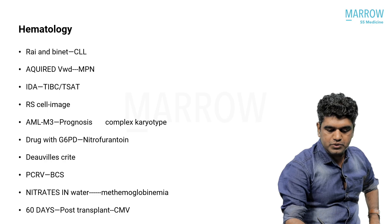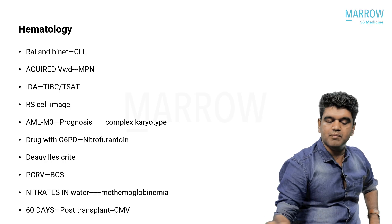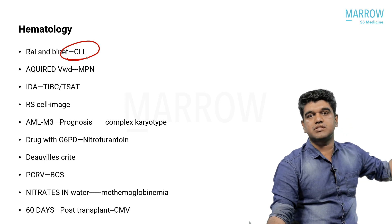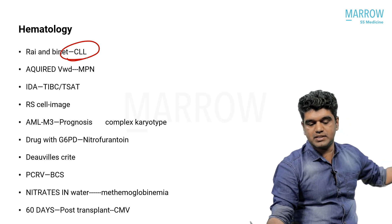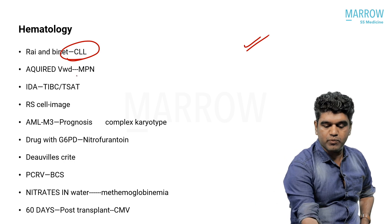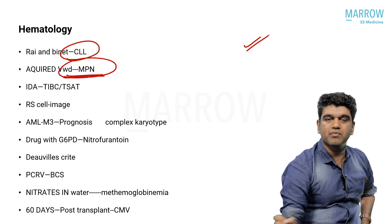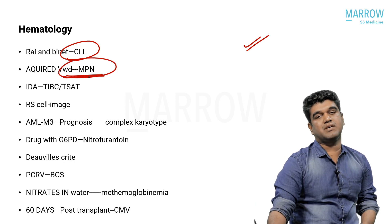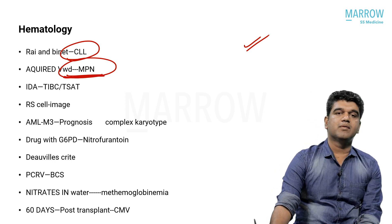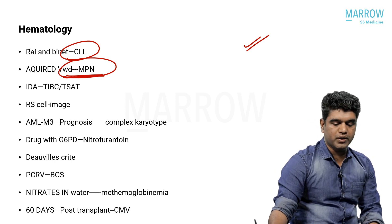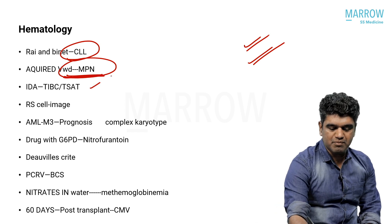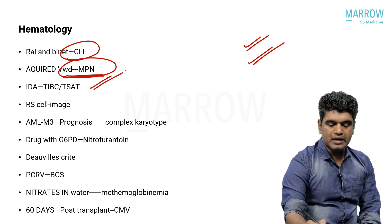In hematology: Rai-Binet classification of CLL — I have discussed it but the hematologist has discussed it in more detail. Acquired von Willebrand disease is seen with myeloproliferative neoplasms — the mechanism of bleeding in PCV is acquired vWD. Again, if you have seen the hematology videos, it is easy to answer. Iron deficiency — very simple questions.